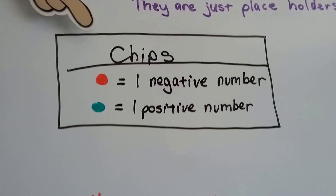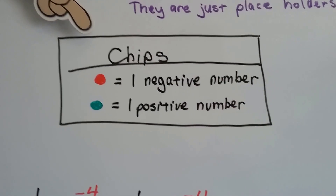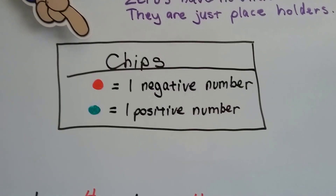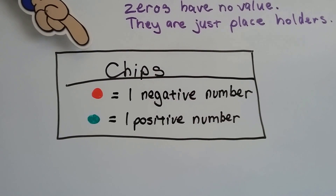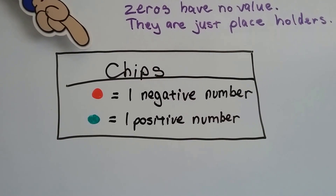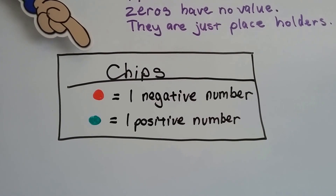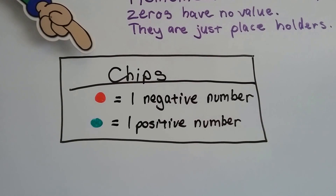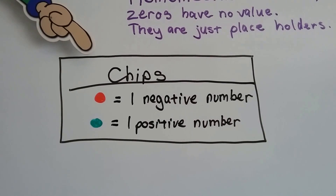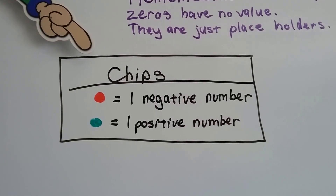I want you to remember that we're going to be using these chips. The red ones mean one negative number, and the green ones mean one positive number. So if I have three red ones, that means I've got a negative 3.